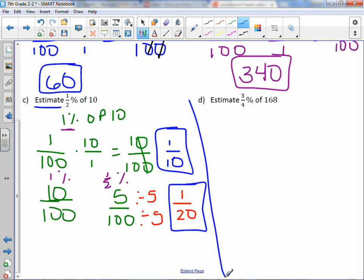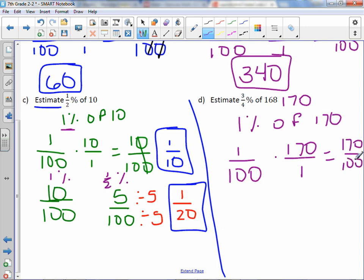Letter D, I would definitely estimate to 1%. 3 fourths is close to 1%, so 1% of 168. And again, I'm going to round this number as well to 170. So we're really finding 1% of 170. 1 would be over 100 times 170 over 1 would give us 170 over 100. Divide by 100, and you would get 1.7. Or you could get 17 over 10. Doesn't really matter. You can leave it as a fraction or a decimal.